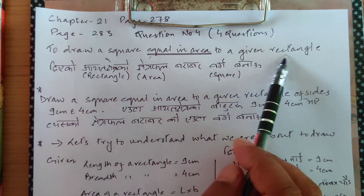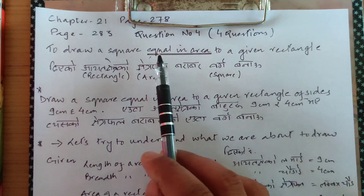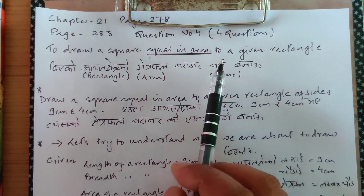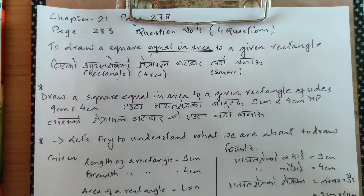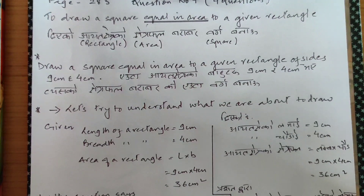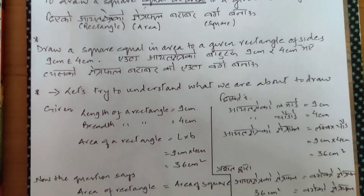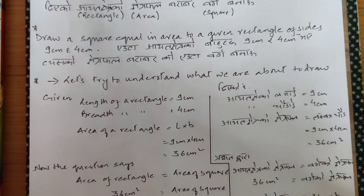The length and breadth of the rectangle will be supplied to you, and you'll have to draw a square whose area is equal to the given rectangle. So let's take down one question: draw a square equal in area to a given rectangle of sides nine centimeter and four centimeter. A rectangle is given to you whose sides are nine centimeter and four centimeter, and now we need to draw a square whose area is equal to the area of the rectangle.